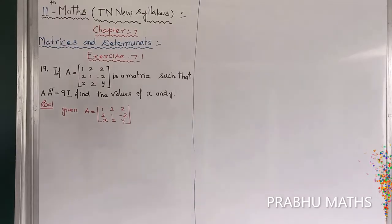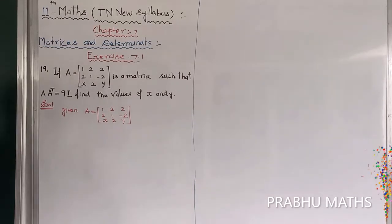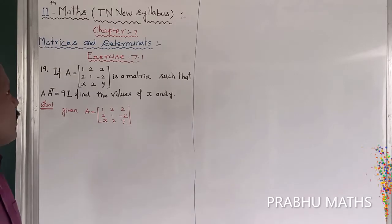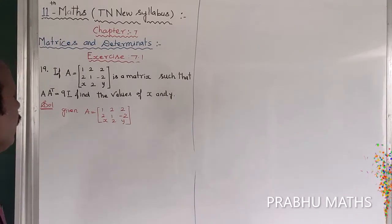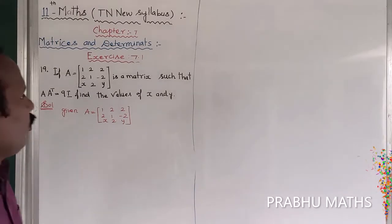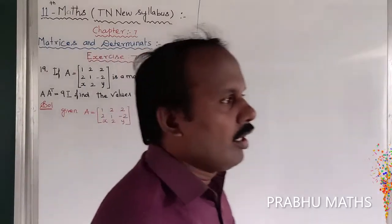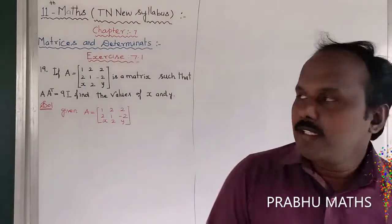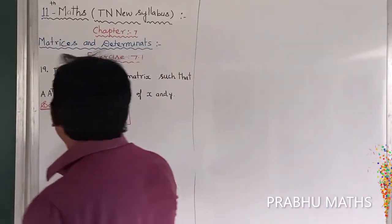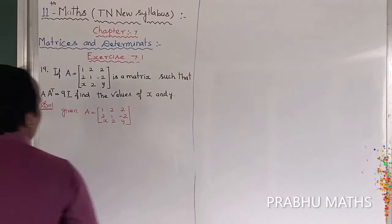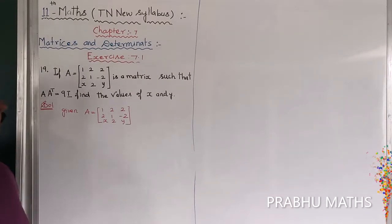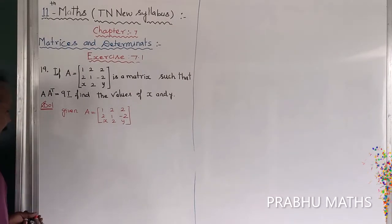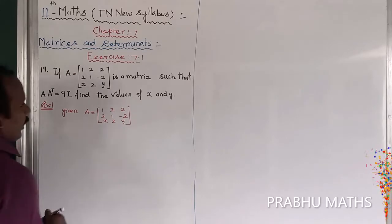Question 19: If A is a 3×3 matrix such that A·Aᵀ = 9I, find the value of X and Y. The given matrix A is equal to [1, 2, 2; 2, 1, -1; X, 2, Y].